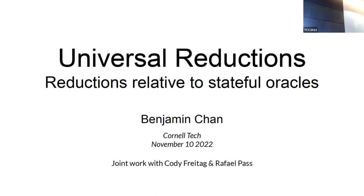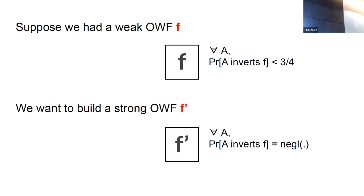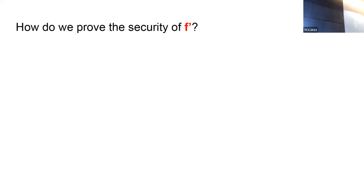Our next speaker is Benjamin Chan, telling us about universal reductions. Thank you. This is joint work with Rafael, Cody, and myself. We have what we think is a very cool notion: universal reductions. Let's jump right in with an example. Suppose we have a weak one-way function and want to build a stronger one f-prime. By security reduction, we assume f-prime is broken with noticeable probability and derive that our reduction inverts f — a contradiction. But this proof is only useful if our model for attackers correctly captures real-world attackers.